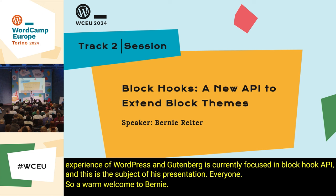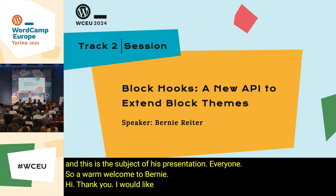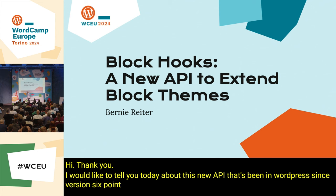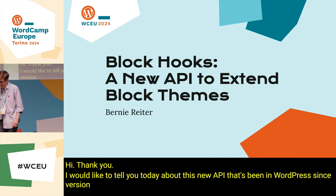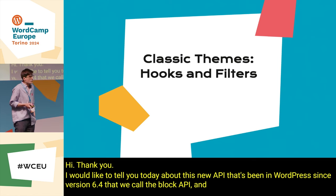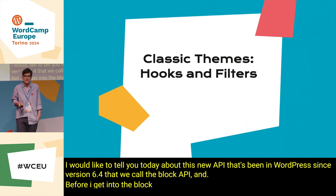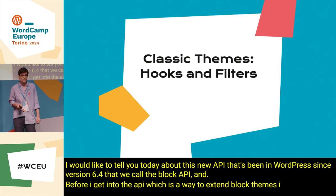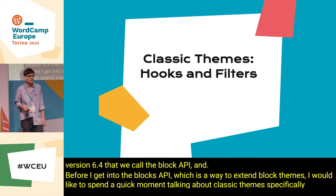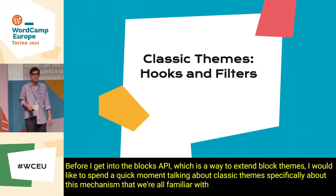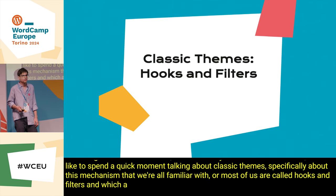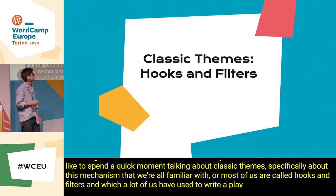I would like to tell you today about this new API that's been in WordPress since version 6.4, that we call the Block Hooks API. Before I get into the Block Hooks API, which is a way to extend block themes, I would like to spend a quick moment talking about classic themes — specifically about hooks and filters, which a lot of us have used to write a plugin for a classic theme in the past.